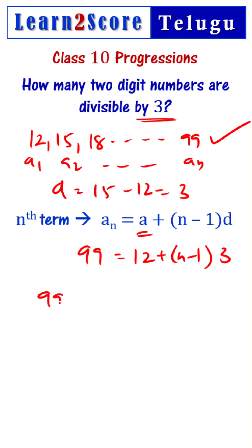Then rearranges the 99 minus 12 divided by 3 equals N minus 1, and 87 by 3, that is equal to 29 equals N minus 1, and N equals 29 plus 1, that is equal to 30.